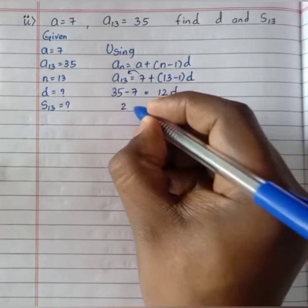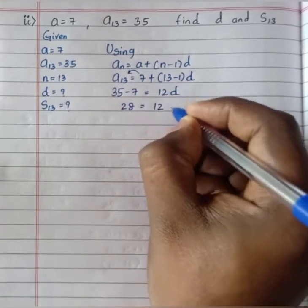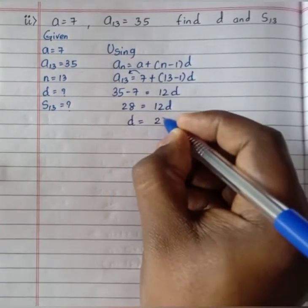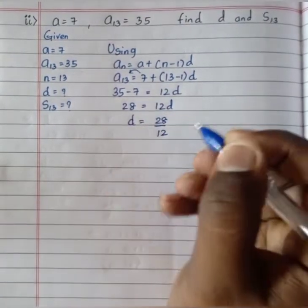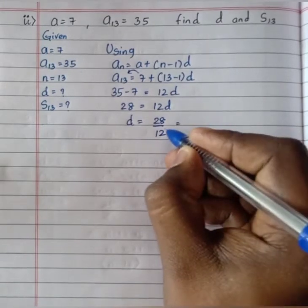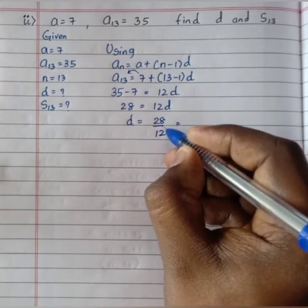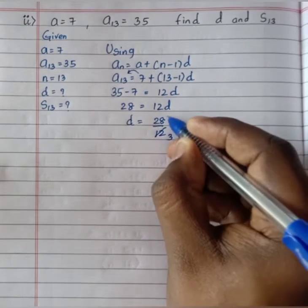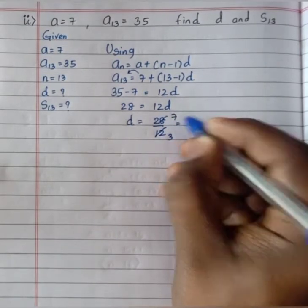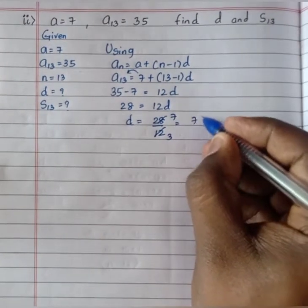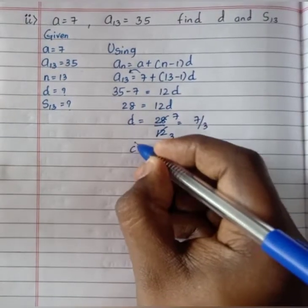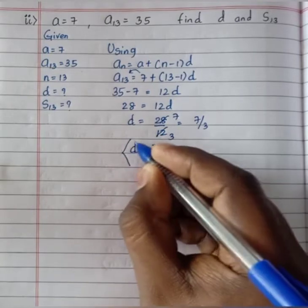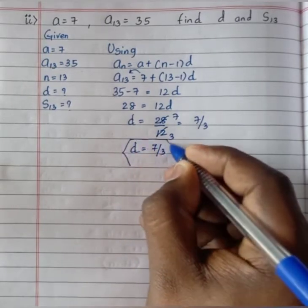Now 35 minus 7 gives 28, which equals 12 times d. So d equals 28 divided by 12. Since 4 times 7 is 28 and 4 times 3 is 12, we get d equals 7 divided by 3.